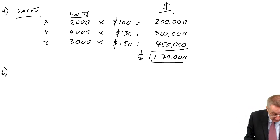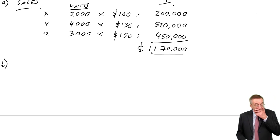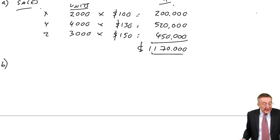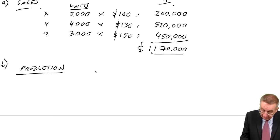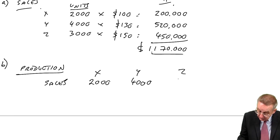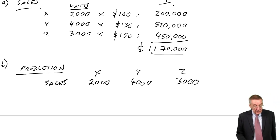What about B? A production budget in units. We know how many we're selling or budgeting on selling. Isn't the production going to be the same? Ah, because of inventories. We're told halfway down the page what the inventories are for each of the three products at the beginning of the year and what we're budgeting them to be at the end. So to get the production, we'll need to adjust for changes in inventory. So our production budget, X, Y, Z. We know what our sales are: 2,000 X, 4,000 Y, 3,000 Z.